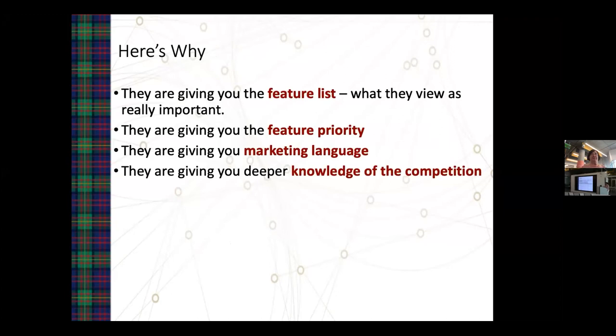Write down everything they say, in order, in their own words. They're giving you a feature list — not only what's important to them and why they liked or disliked the current solution, but also the priority: the first thing they mention is usually what matters most. They're also giving you the marketing language — how they talk about solutions on the market. Good salespeople listen and then pair it back: 'I have a solution that does X' — 'Oh, that sounds like something I could use.' They're also telling you who the competition is.